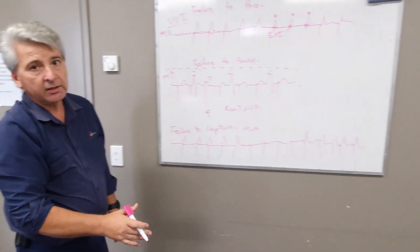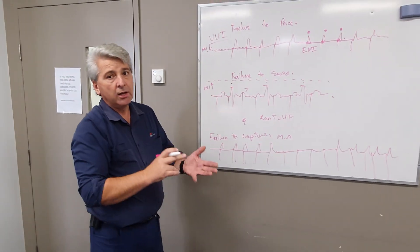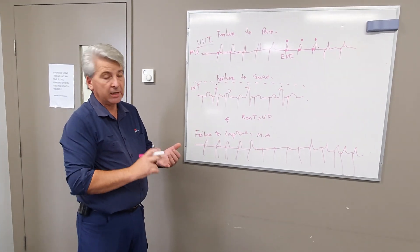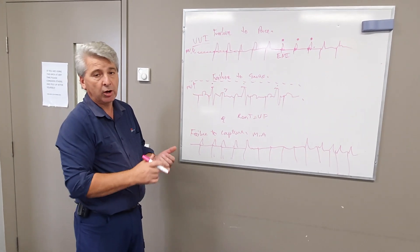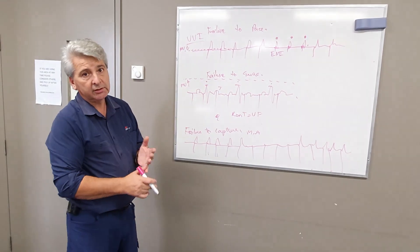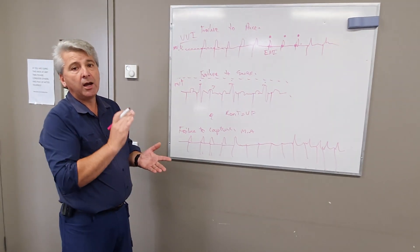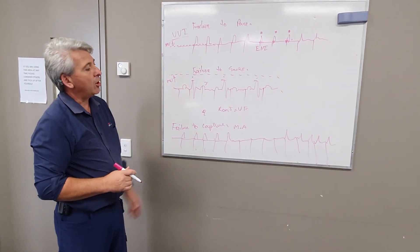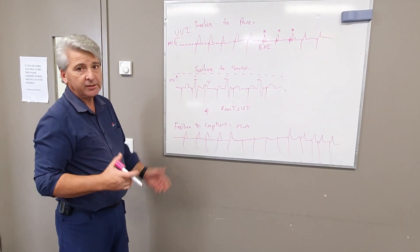The reason these things happen is because of what I call TKVO. So, the old adage of to keep vein open, I use it as temperature, potassium, volume, oxygen. So hypothermia will change things. Hypovolemia electrolytes, and hypoxia. And that's it.